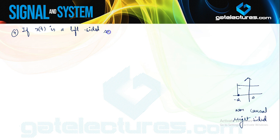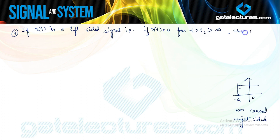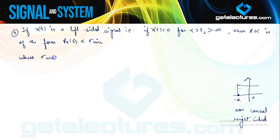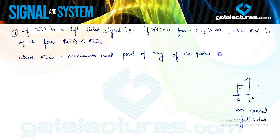If x(t) is a left-sided signal — meaning x(t) = 0 for any t greater than t₂ — it occurs only for values of t to the left of t₂. Then the ROC is of the form Re(s) < σ_min, where σ_min is the minimum real part of any of the poles of X(s). The ROC is a half-plane to the left of the vertical line Re(s) = σ_min, i.e., to the left of the leftmost pole.